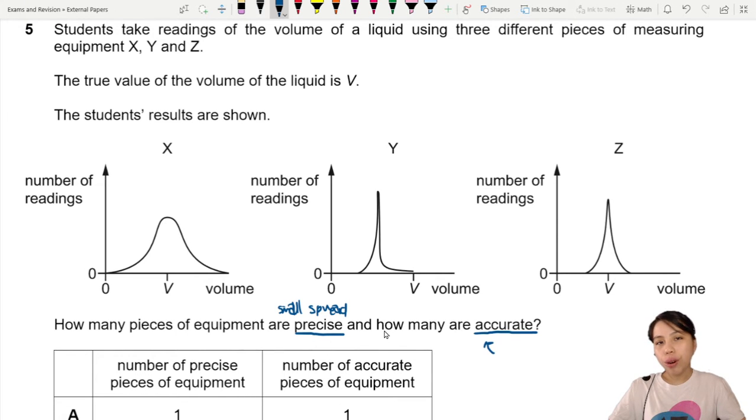Accurate means you're very close to the true value. So in other words, you can say that your average value is close to the true value.